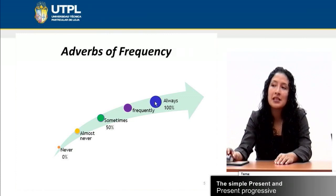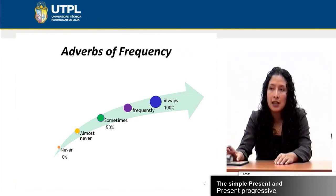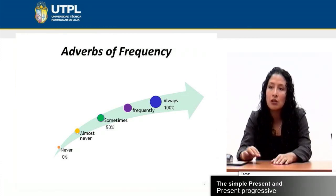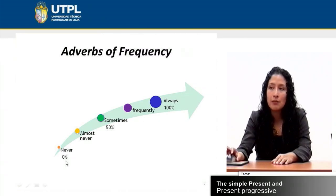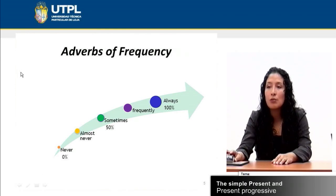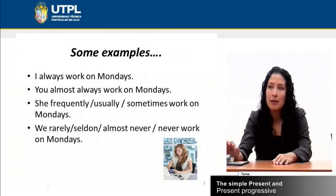For example, 'I always work' or 'I always teach grammar.' This is something done one hundred percent of the time. Frequently, sometimes — about fifty percent — almost never, and never, which is something we don't do at all. So adverbs of frequency are words that express how often we do something.